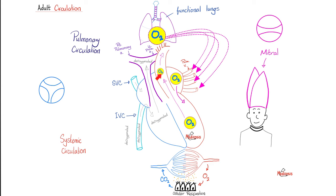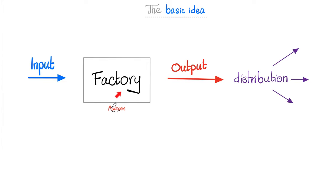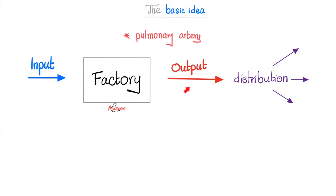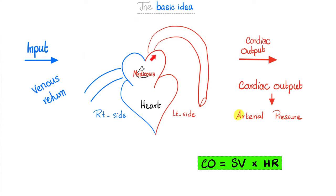The next valve is the aortic valve. The basic idea is that your heart is a factory — there is input through veins and output through arteries. For the right heart, input comes through the superior and inferior vena cava; for the left heart, through the pulmonary veins. Output from the right ventricle goes through the pulmonary artery; from the left ventricle, through the aorta. So the output is arterial, and input is venous.